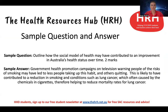Let's have a look at a sample question and answer. The question asks you to outline how the social model of health may have contributed to improvement in Australia's health status over time, for two marks. The sample answer starts with an example — government health promotion campaigns on television warning people of the risks of smoking may have led to fewer people taking up the habit and others quitting. This likely contributed to a reduction in smoking and in conditions such as lung cancer, helping to reduce mortality rates. The first sentence gives the example; the second links it to improved health status.